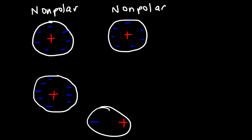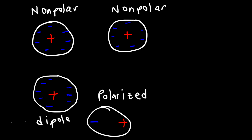Granted, there is still negative charge on the right side, but this positive charge means that it's less negative than the left side. So now this atom is polarized — it's now a dipole. This dipole doesn't last long; it may last for a very, very short time. So it's a temporary dipole.